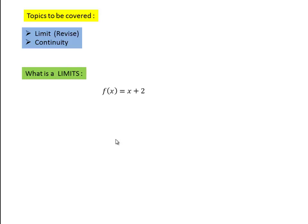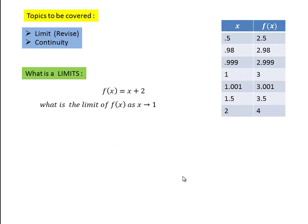What is the limit? Let us take a function f(x) = x + 2, and the question is: what is the limit of the function f(x) when x is approaching towards 1? We have a table. When we take the x value smaller and smaller, very close to 1, decreasing and reaching very close to 1, we notice that the value of f(x) is decreasing and approaching very close to 3.